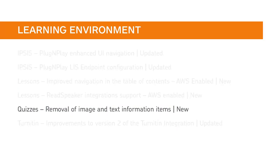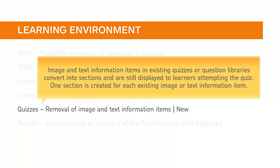As images and text can be included in any type of question using the features of the HTML editor, there is no longer a need for image and text information items. Image and text information items in existing quizzes or question libraries convert into sections and are still displayed to learners attempting the quiz. One section is created for each existing image or text information item.